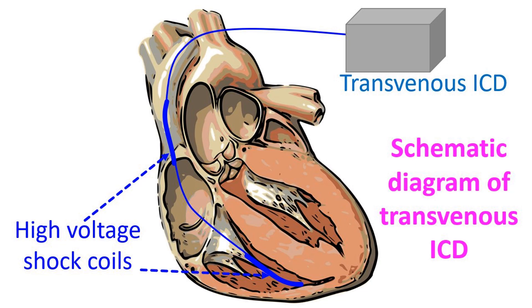The ICD system consists of a pulse generator with battery, usually implanted below the left clavicle for transvenous ICDs. The pulse generator is implanted below the left axilla in case of purely subcutaneous ICD and extravascular ICD. Left-sided implants are preferred because ICD shocks will be more effective with an ICD pulse generator CAN on the left side. The ICD pulse generator CAN is one active electrode, while high voltage coils located in the superior vena cava and right ventricle are the other active shock electrodes for a transvenous ICD.